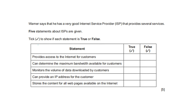Palmer says he has a very good internet service provider that provides several services. Five statements about ISPs are given — tick to show if each is true or false. ISP provides access to the internet for customers — true. ISP can determine the maximum bandwidth available for customers — true. ISP can monitor the volume of data downloaded by a customer — true. ISP can provide an IP address for the customer — true. ISP can store the content for all webpages available on the internet — false.